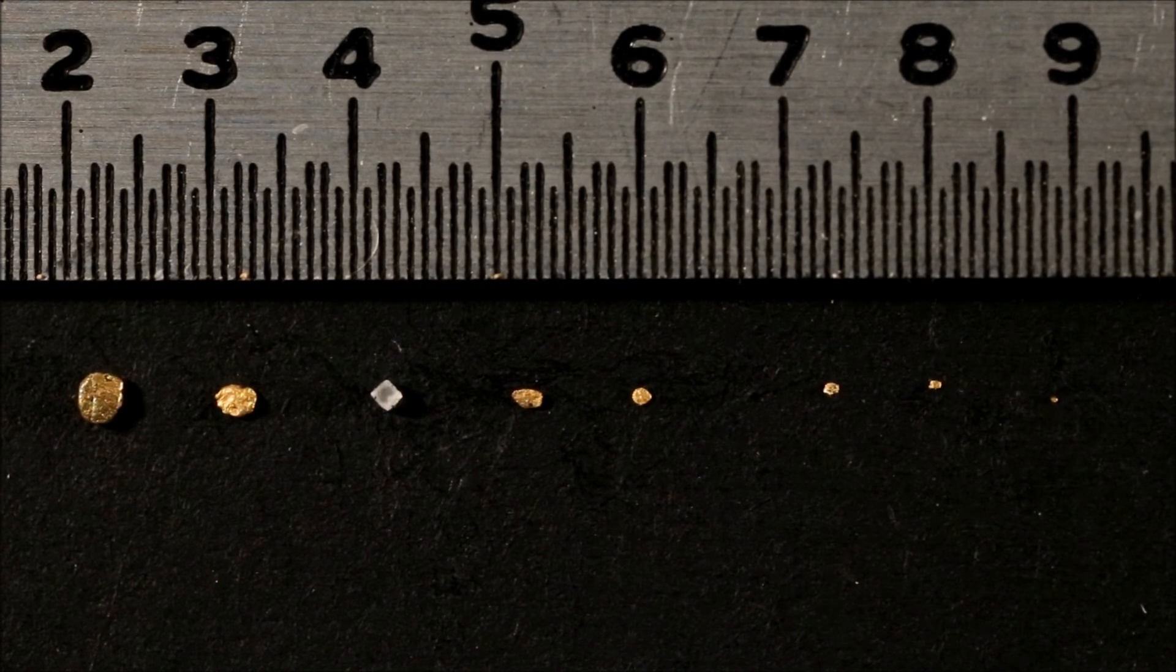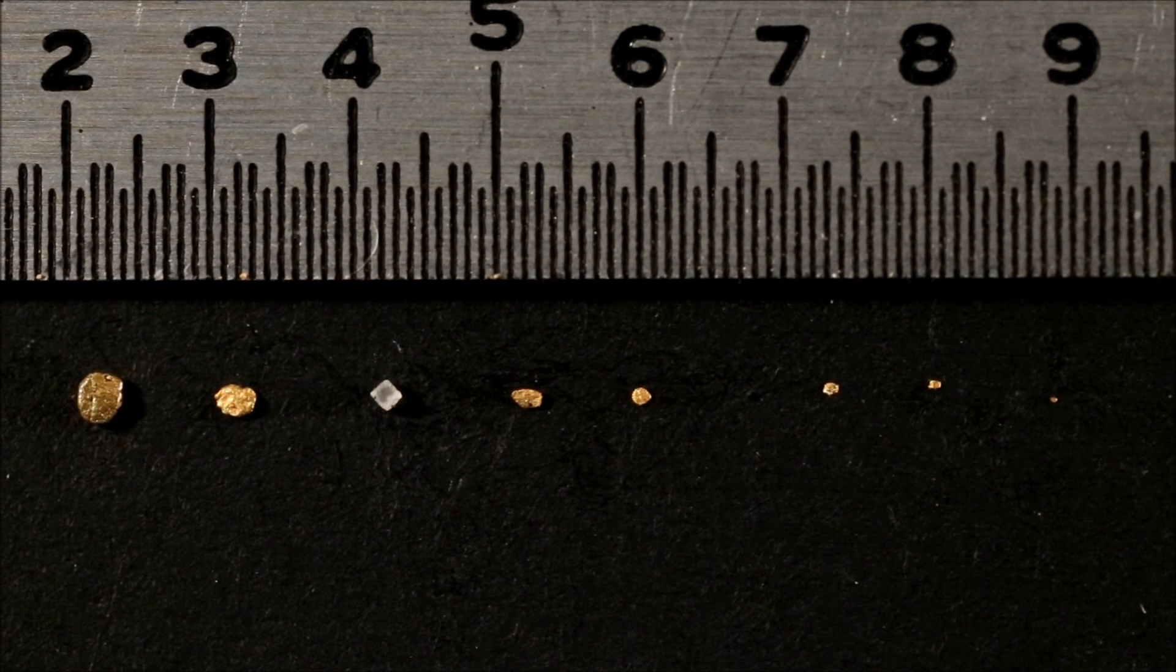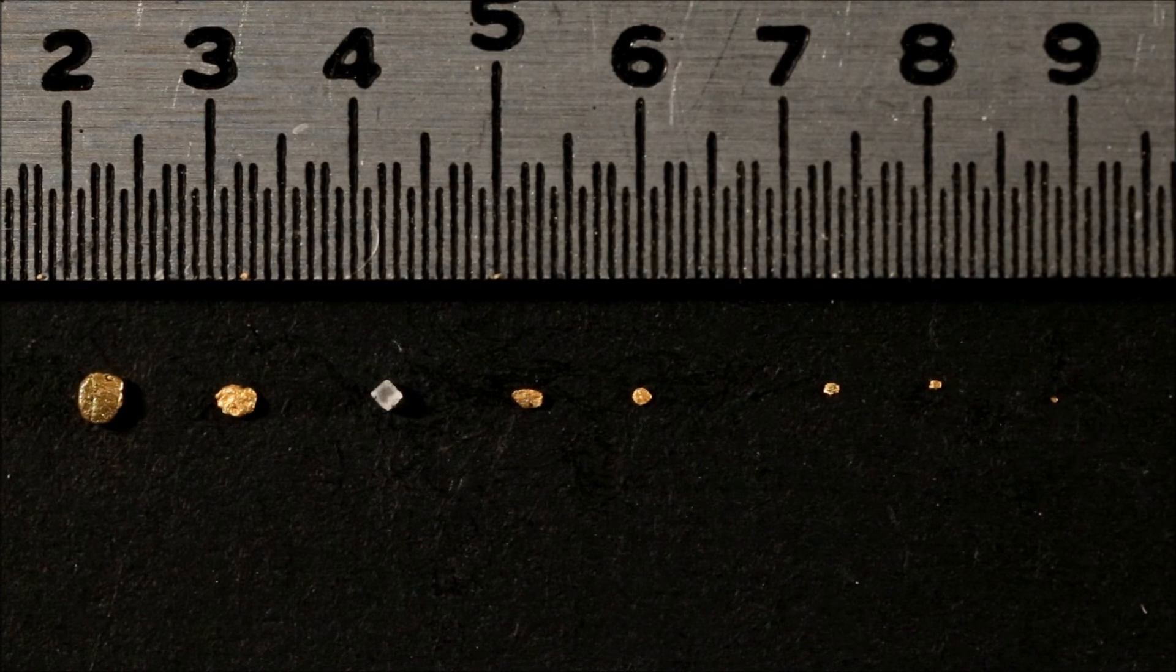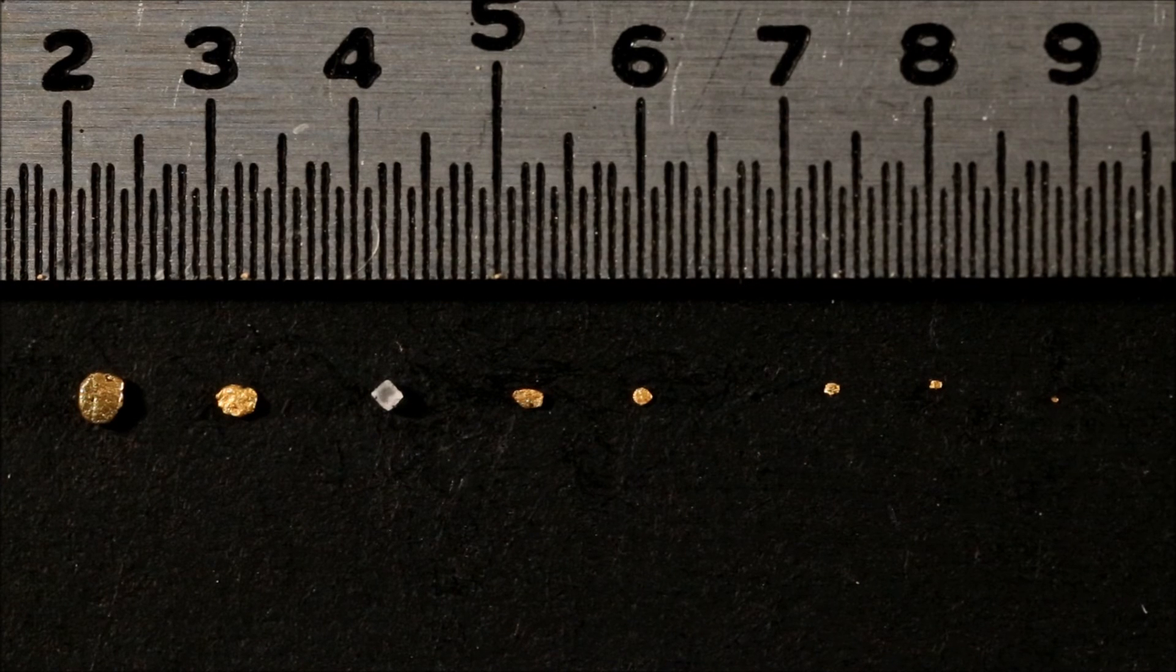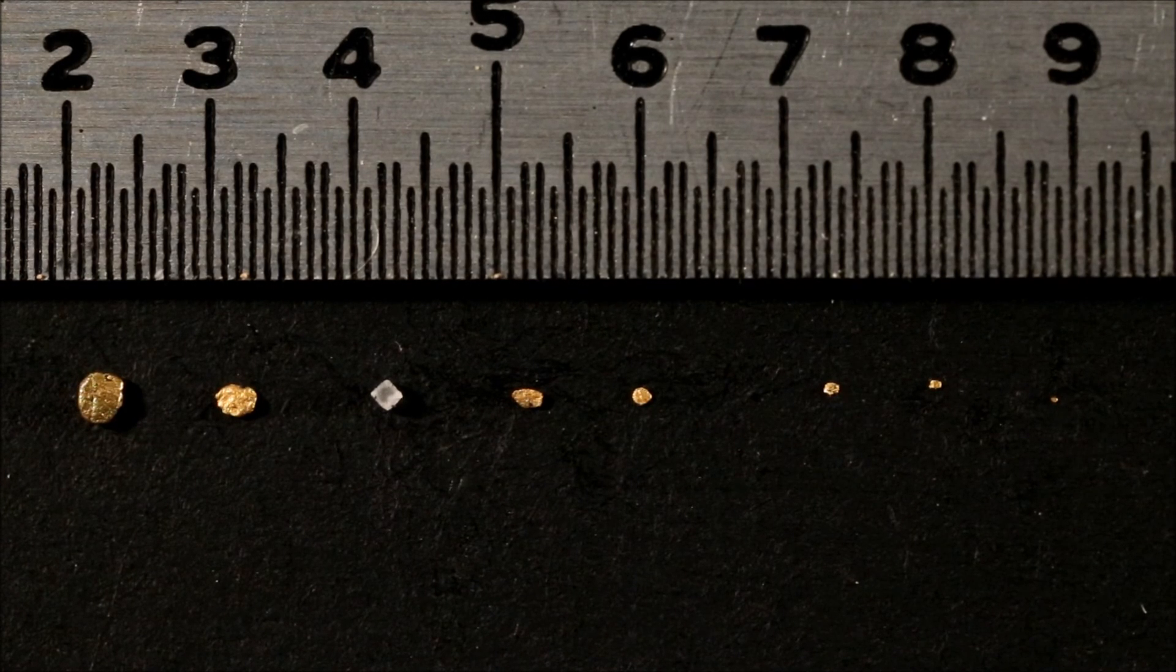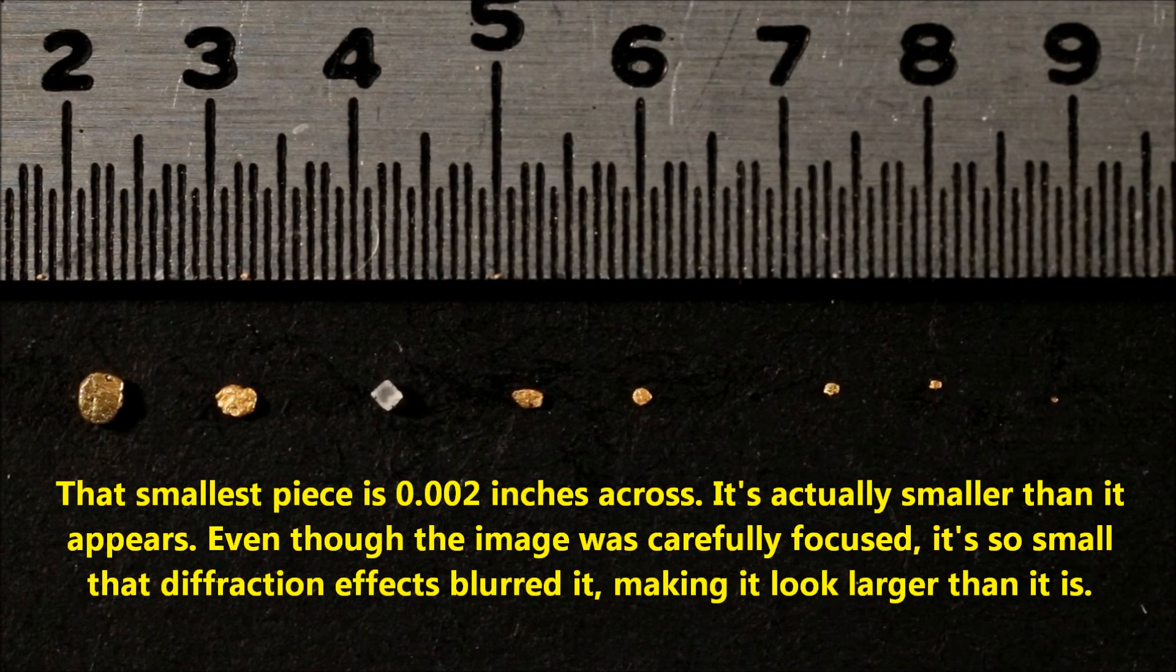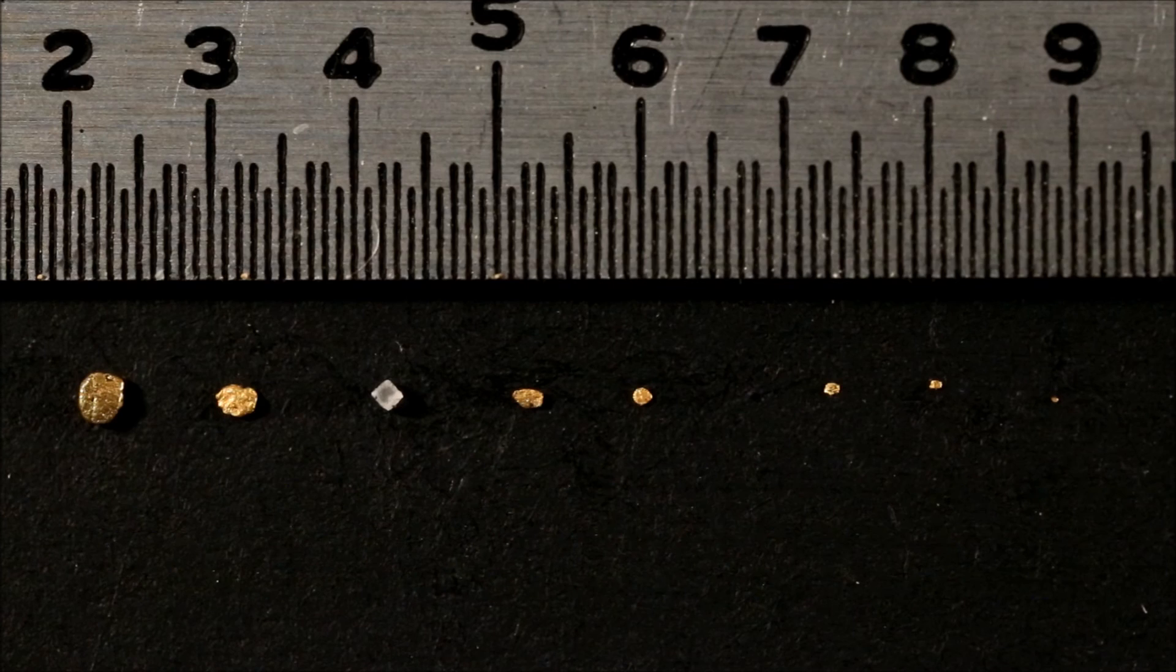And the one on the far right, the smallest one, is a 200 mesh piece of gold. That piece of gold is so small that if you have 20-20 vision and you're looking at it on a piece of black paper just 12 inches away, you can't see it. It is too small. You need a magnifying lens to be able to spot that. That's how small that is.